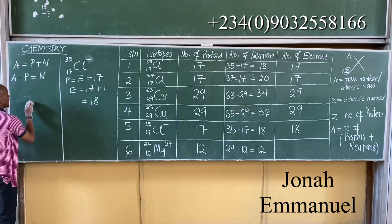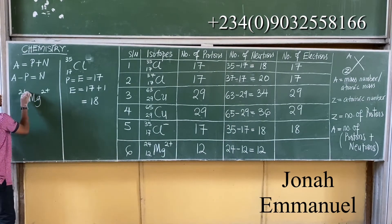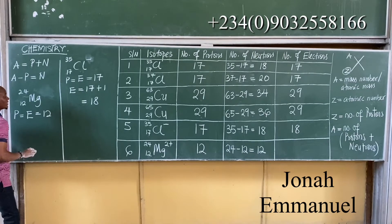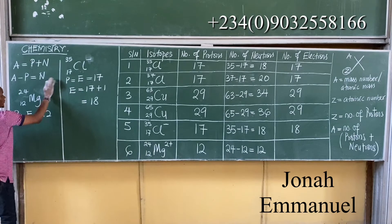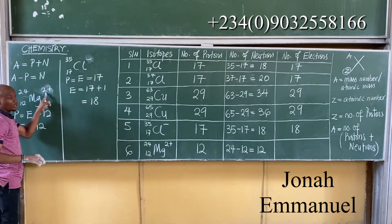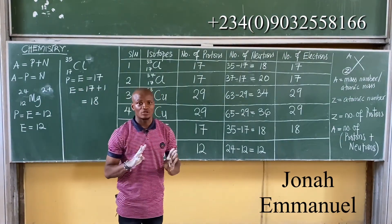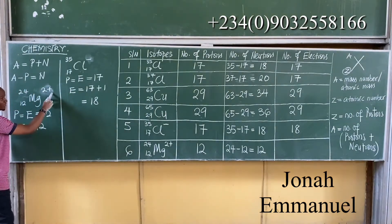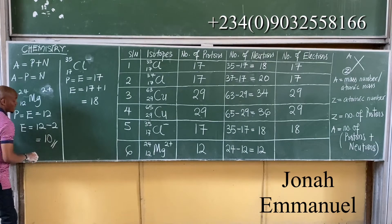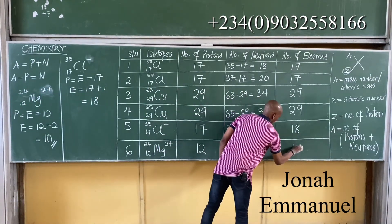For Magnesium ion Mg²⁺ (atomic number 12, mass number 24): if we ignore the charge, it's a neutral atom with 12 electrons. But since it has a 2-plus charge, it means it has lost 2 electrons. So 12 minus 2 gives 10 electrons as the number of electrons.